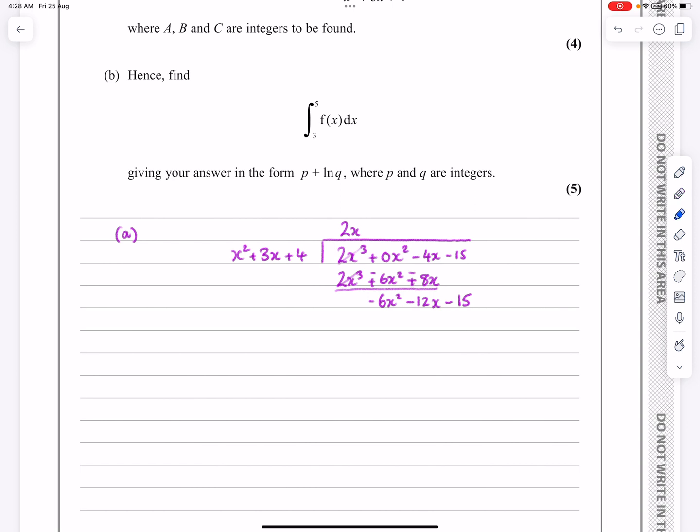And now we're just going to be repeating the process, but this time, how many times does x squared go into whatever that function is? So how many times does it go in? It goes in minus 6 times.